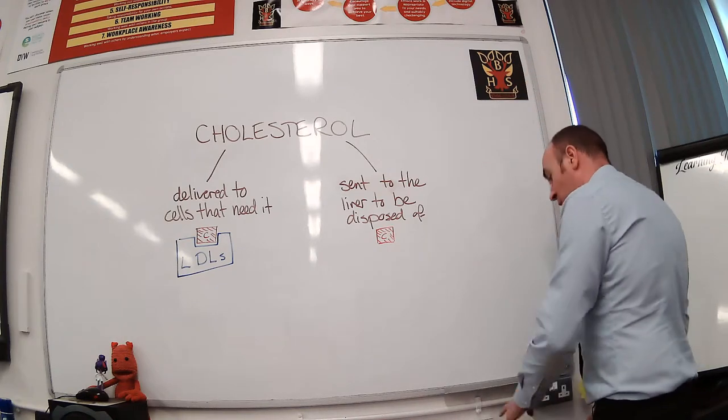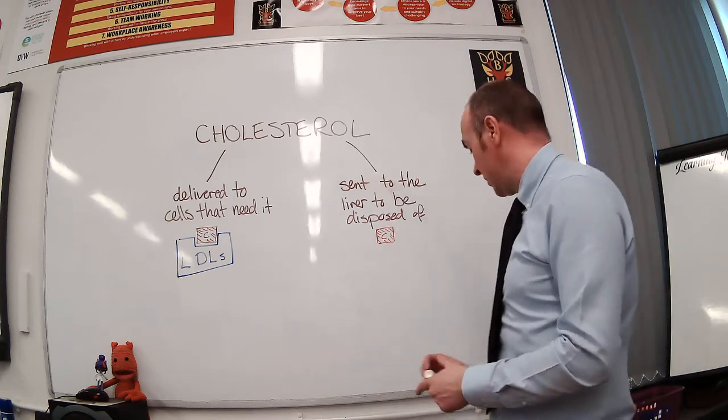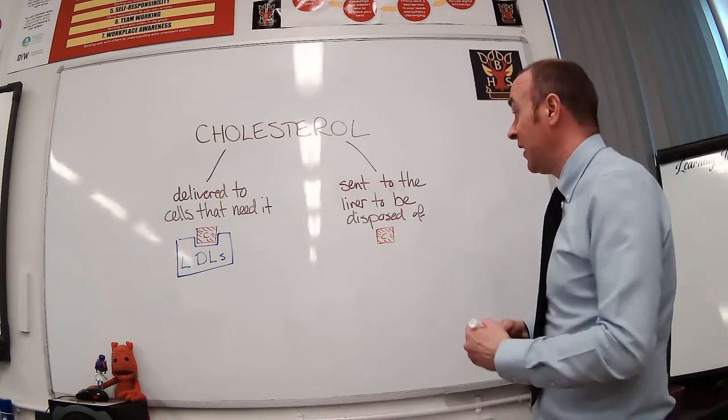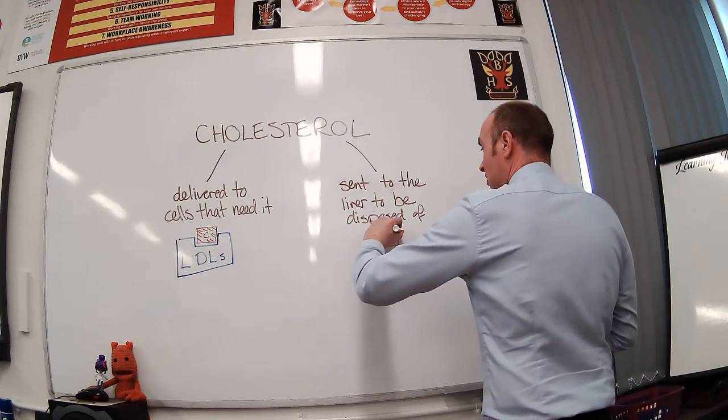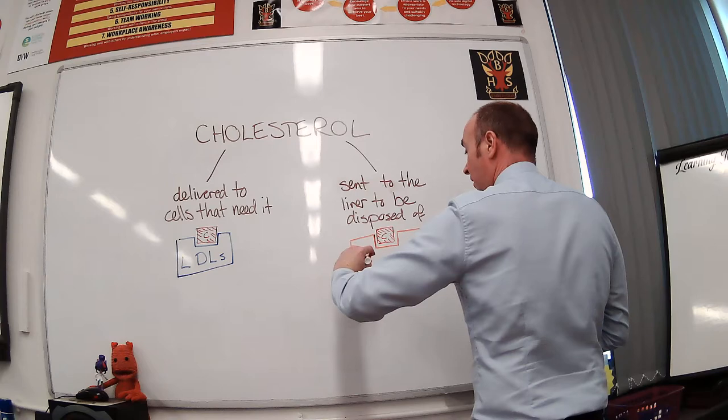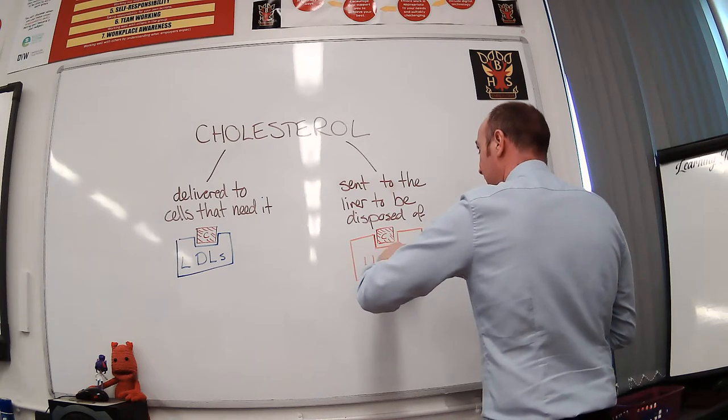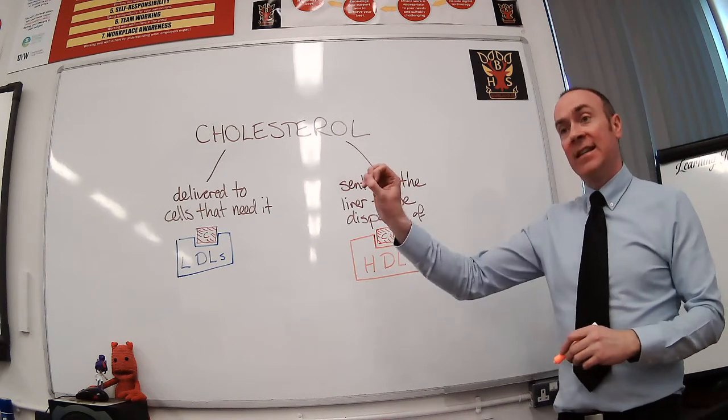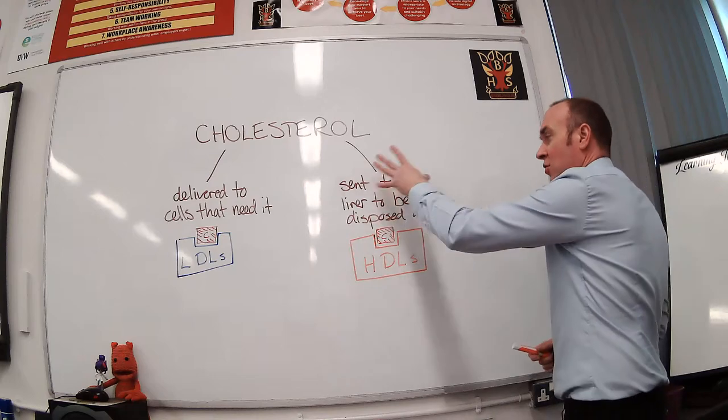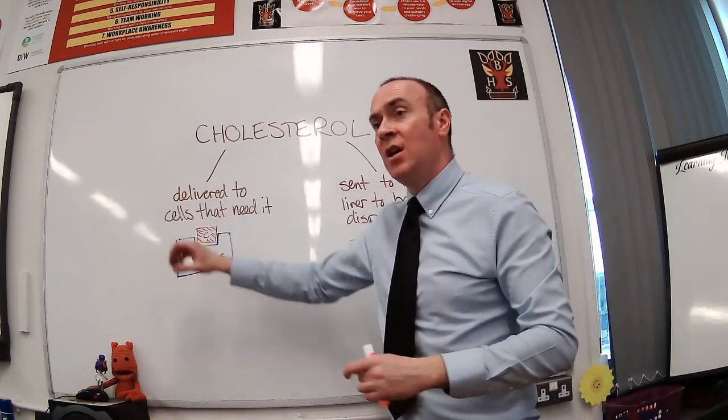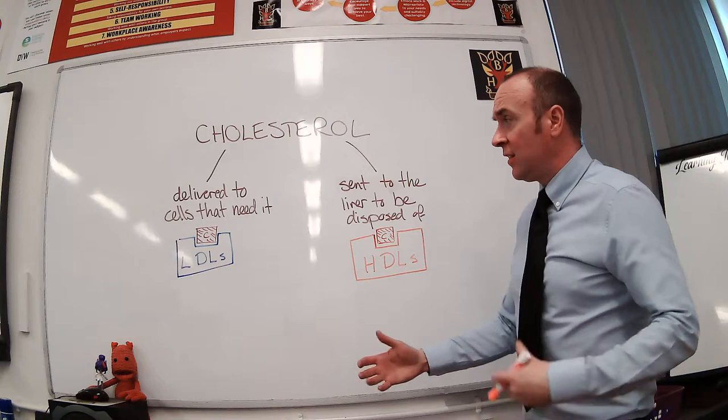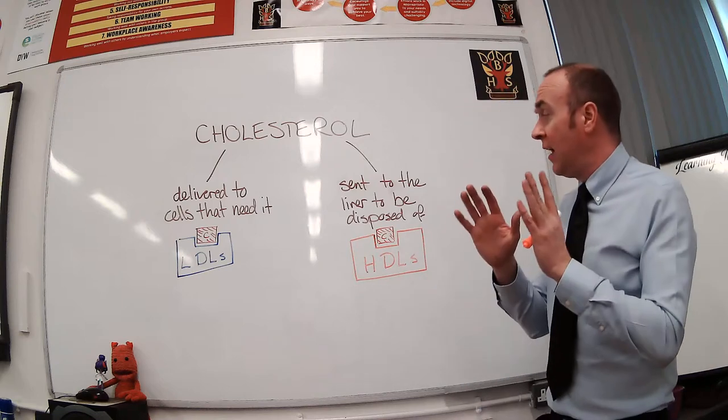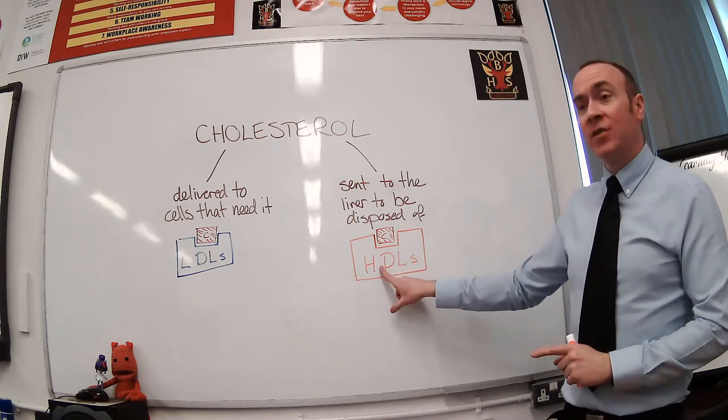Whereas on the other hand, we also have a second situation where sometimes cells have got all the possible cholesterol that they need and you still need to get rid of it because it can be a damaging thing. So you have these other carriers called high-density lipoproteins and it's their job when they grab onto a bit of cholesterol they take it to the liver to get destroyed. And the analogy I use with this is the bin lorries. So you've got Amazon drivers and you've got bin lorries.